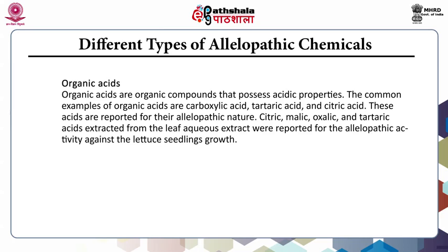The second class is organic acids. These are compounds that possess acidic properties. Common examples include carboxylic acid, tartaric acid and citric acid. These acids are reported for their allelopathic nature. Citric, malic, oxalic and tartaric acids have been extracted from leaf aqueous extracts and were reported for allelopathic activity against lettuce seedling growth.